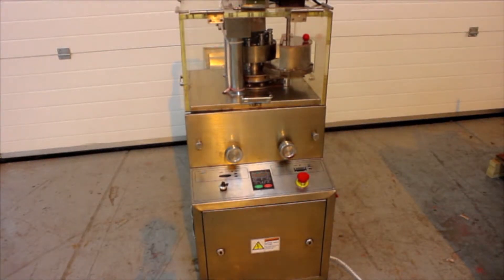When fitted with a 5 pin turret, this model is able to produce 9,000 tablets per hour. When fitted with a 7 pin turret, this model is able to produce 12,000 tablets per hour. When fitted with a 9 head turret, the RTP 9 is able to produce 16,000 tablets per hour.